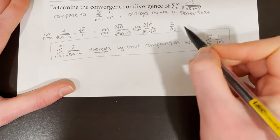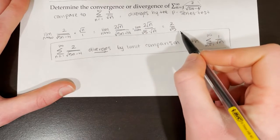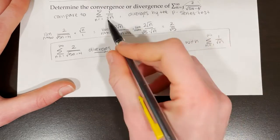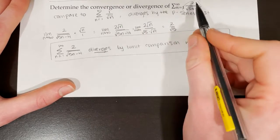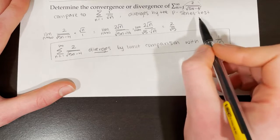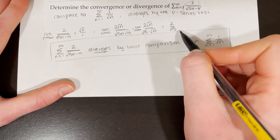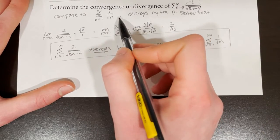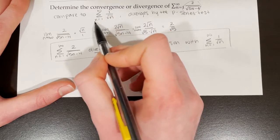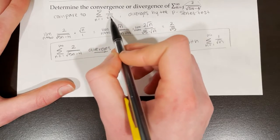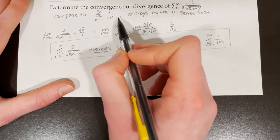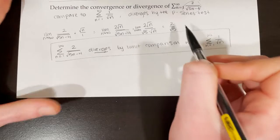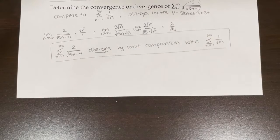Something to note: if you get something that is not a positive finite number, that means you can't conclude the behaviors of the two series are the same. It might also mean you compared to the wrong series. For instance, if you chose to compare this to the series of 1 over n squared, that would not work — you would not get a finite positive number, so you would have to choose something else.